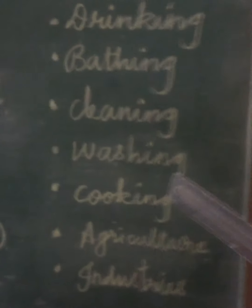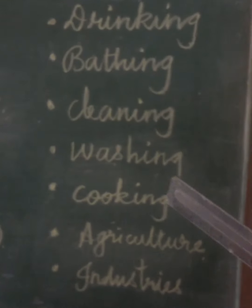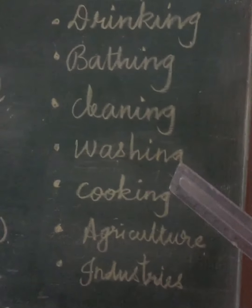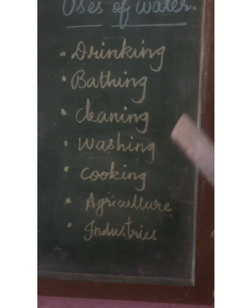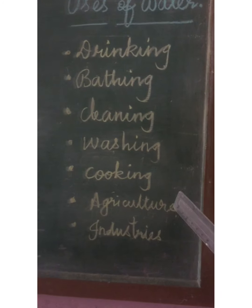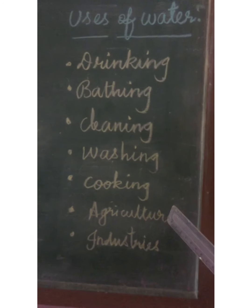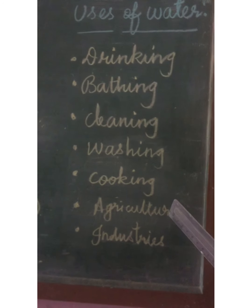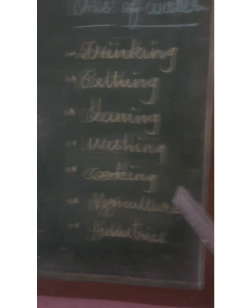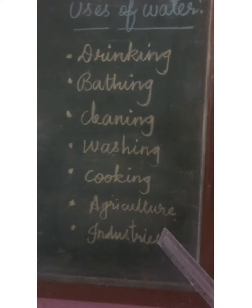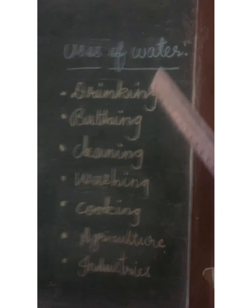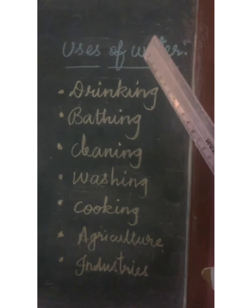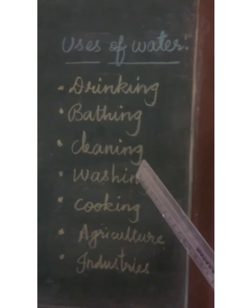Next, water is used for washing clothes. Next, water is used to cook food items. Next, water is used in agriculture — it is used to grow plants. Next, water is used for industrial purposes. So these are the various uses of water in our day to day life.